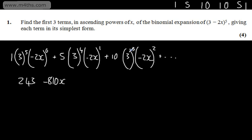We've got now 10 multiplied by 3 to the power of 3. 3 to the power of 3 is going to give me 27. So that's going to be 270. And we're going to multiply this by positive 4x squared. So we'll get plus 1080x squared and so on and so forth.